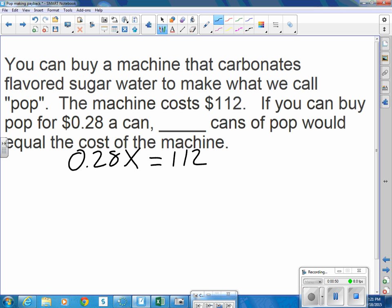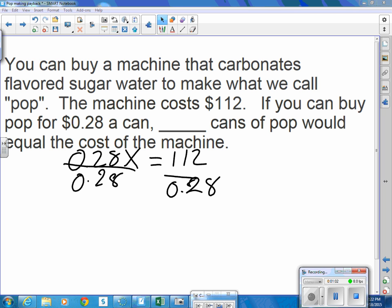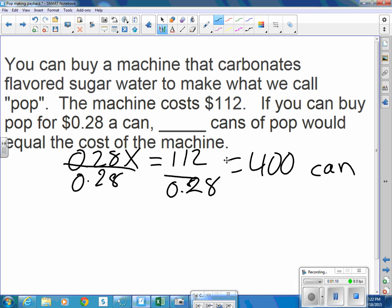So we could solve this equation. Divide by 0.28. That will tell us how many 28 cents are in $112. The calculator says that is 400. We're talking about cans. So making 400 cans will pay for itself, at least pay for the cost of the machine.